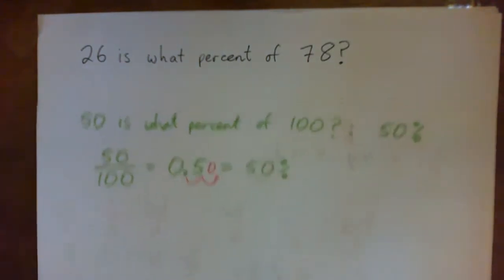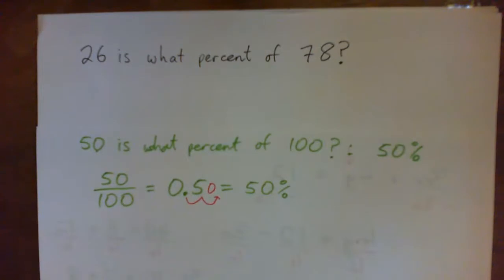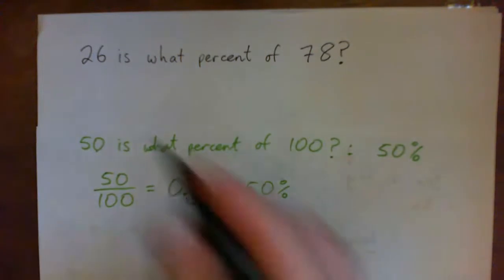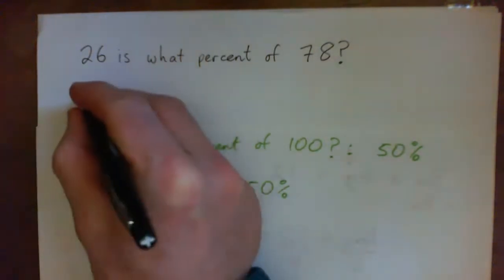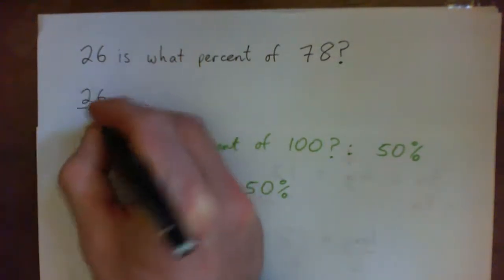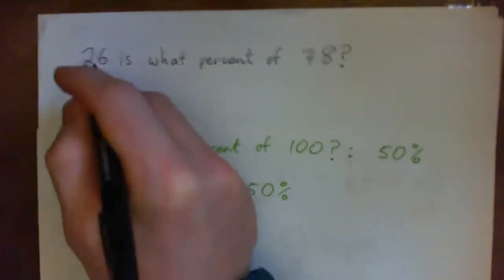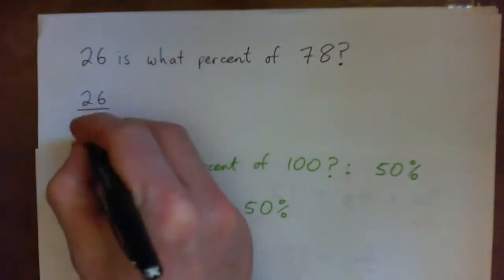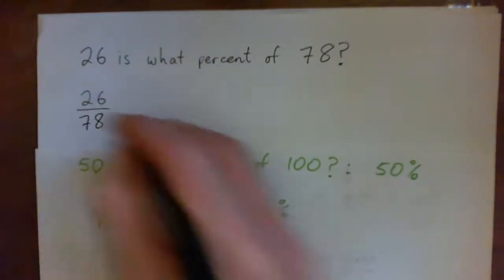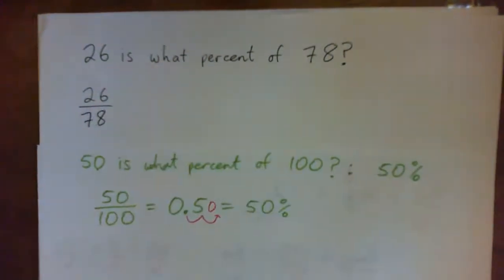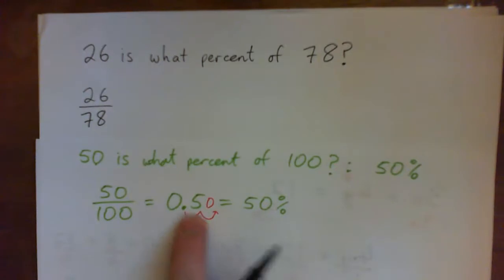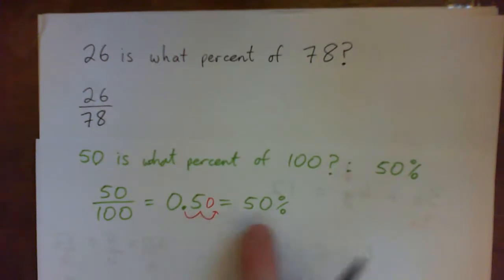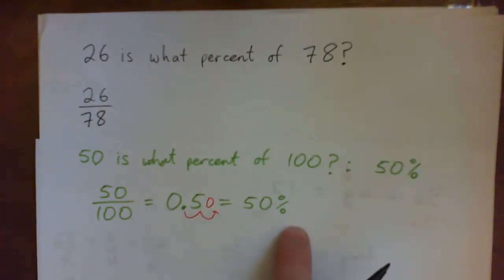That same method should work for our problem. If we put 26 over 78, that's the same approach — then we turn it into a decimal and find the percentage.